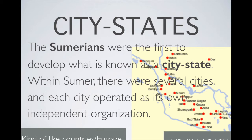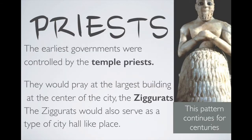Some examples of city-states include Uruk and Lagash. During this time, priests were the strongest members of society — they would run both government and religion from buildings known as ziggurats.